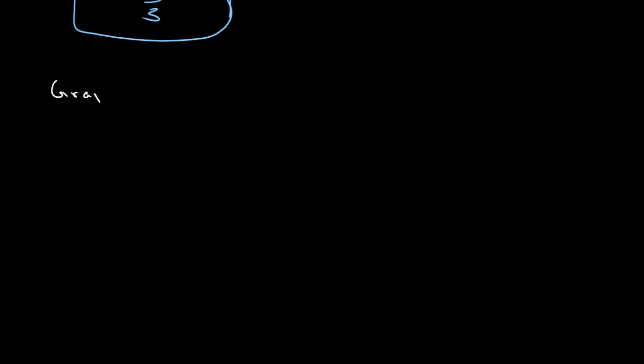The last method is to solve graphically. As you probably guessed, you essentially draw a graph of both equations and find the point where they intersect. Let's use the example: the absolute value of x minus 5 equals the absolute value of x plus 1. We just need to sketch the absolute value graphs for both.